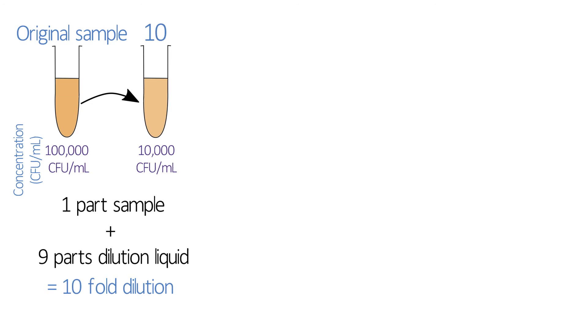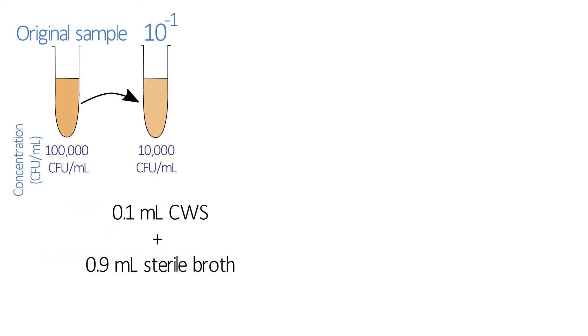We'll call this the ten to the minus one dilution. Ten to the minus one means exactly the same thing as one divided by ten, but biologists usually express dilutions in the exponential notation, so make sure you're happy with this. In our case, we'll take 0.1 ml of the sample and add it to 0.9 ml of sterile nutrient broth, and this is our first dilution.